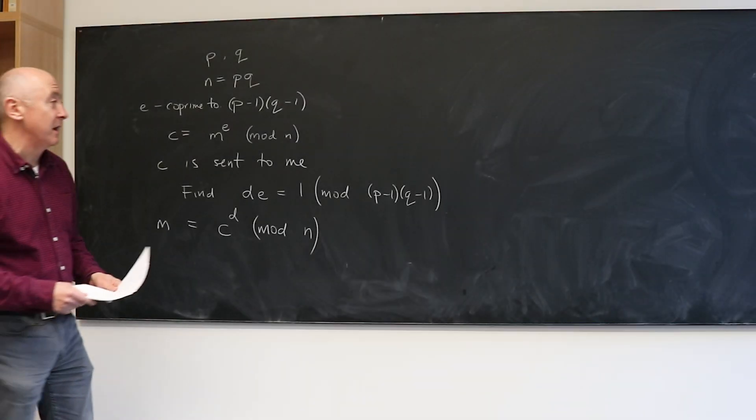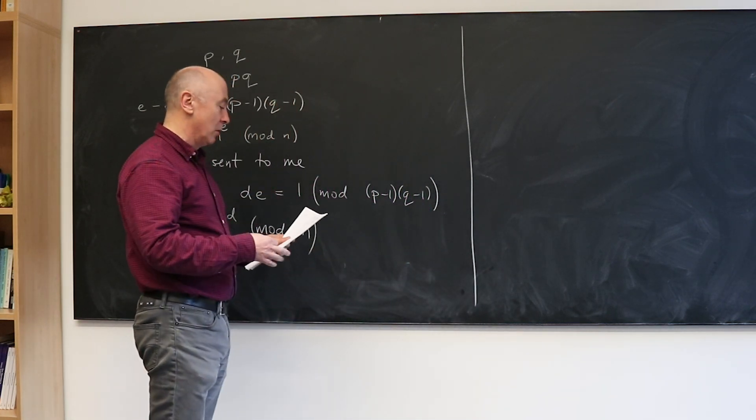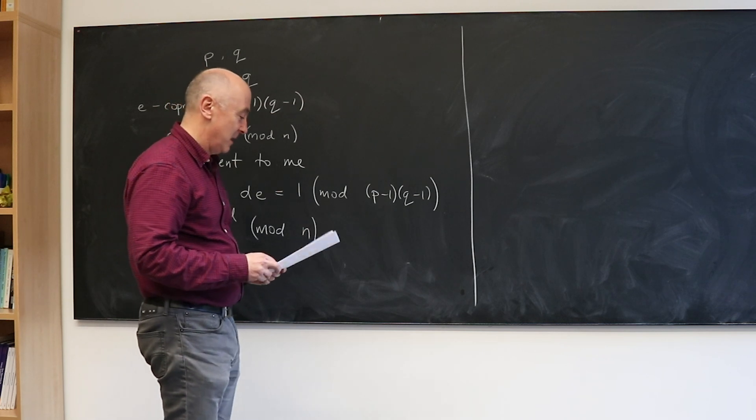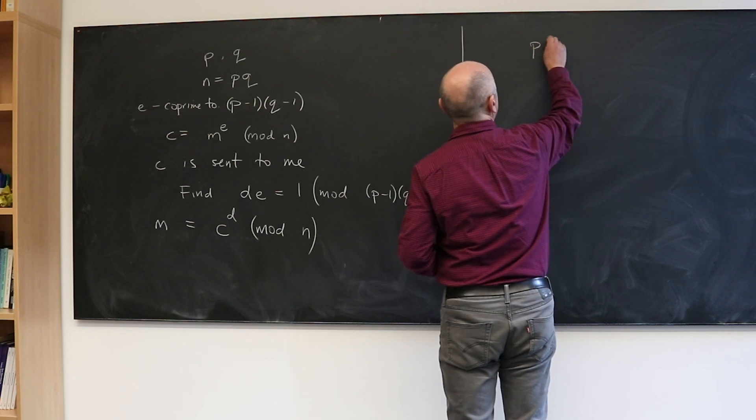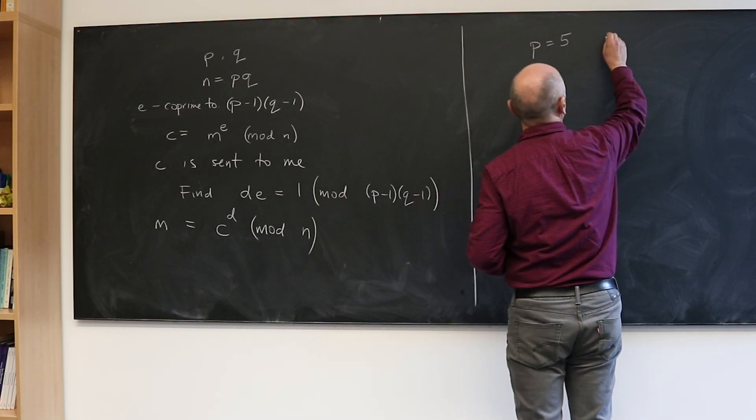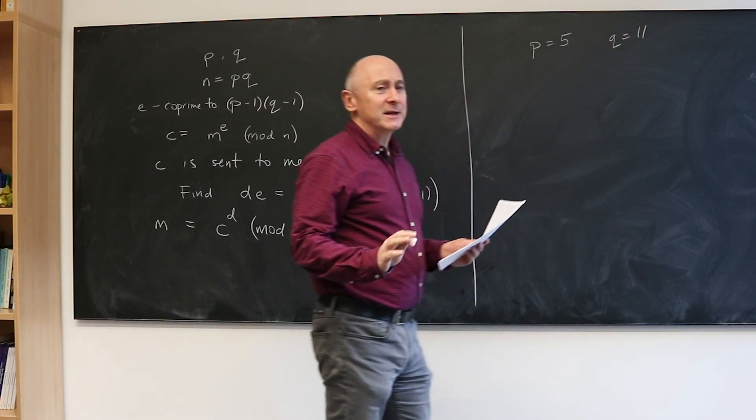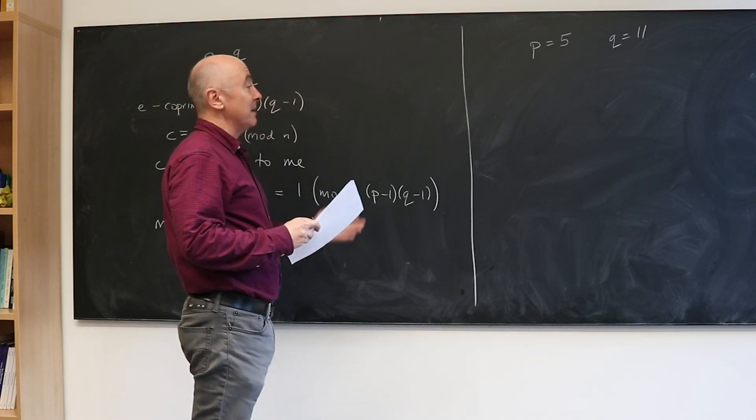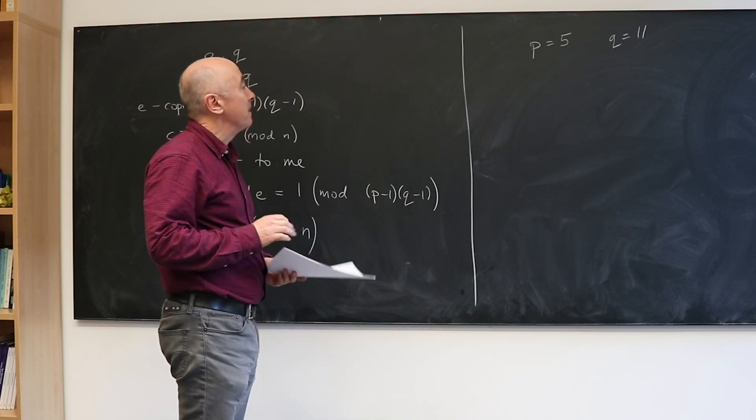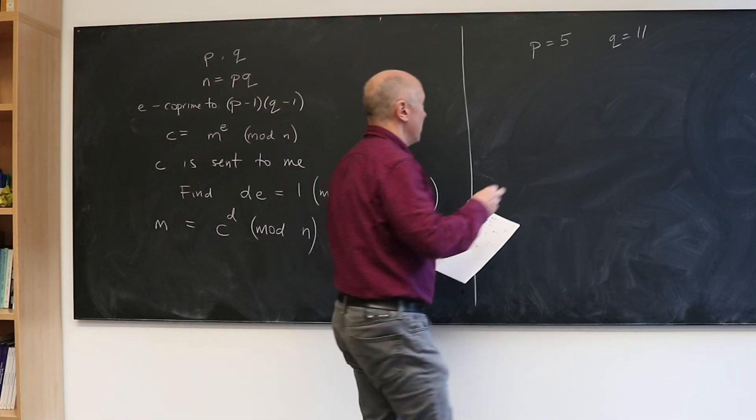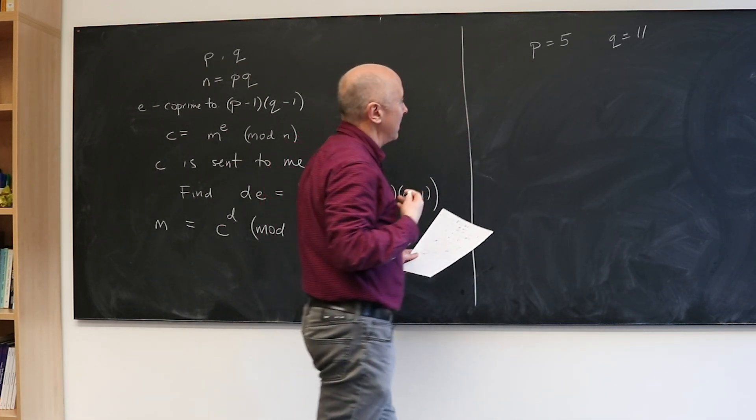I'm going to start with an ultra simple example and then do some that require a little more arithmetic, but it's fun arithmetic. The example I'm going to start with is where P is 5 and Q is 11. Now this is a baby example. In practice you would use numbers, primes with maybe 100 digits, but I'm doing this just for illustrative purposes.